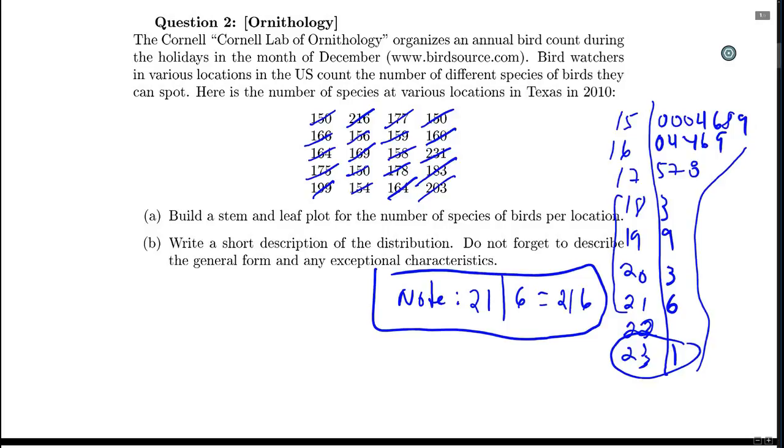If we were to try to describe the center, we could try to identify the median. It's quite easy to find inside of the stem and leaf plot. We have how many values? 1, 2, 3, 4, 5, 6, 7, 8, 9, 10. If I count down my leaves, the 10th and the 11th would represent 164 and 166. So if I take the median of these two values, I get 165. The median number of species found on a location is 165. This describes the center.